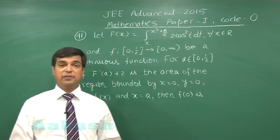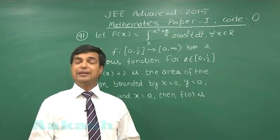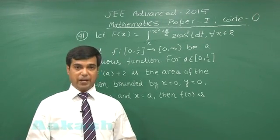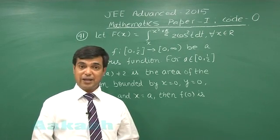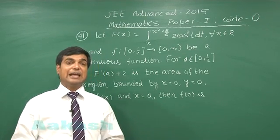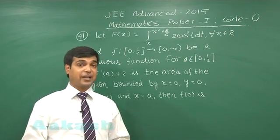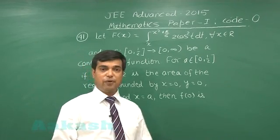In today's paper, when we talk about the section division, there are three sections in paper 1. Section 1 contains again the twisting element. Section 1 contains 8 questions of integer type, there was no negative marking for that.